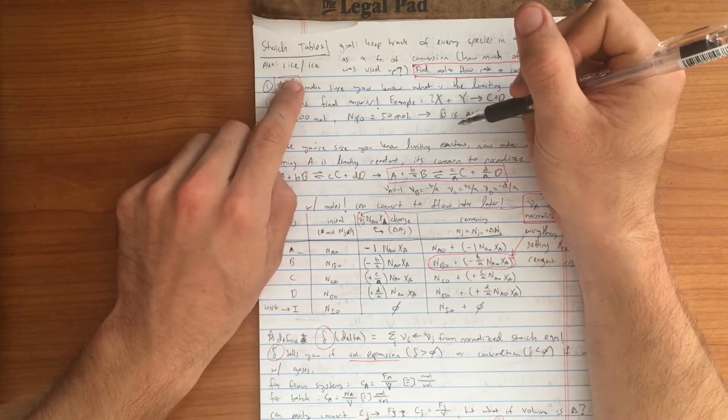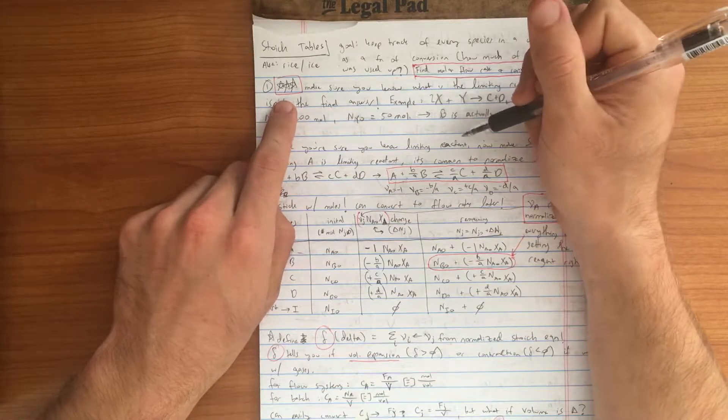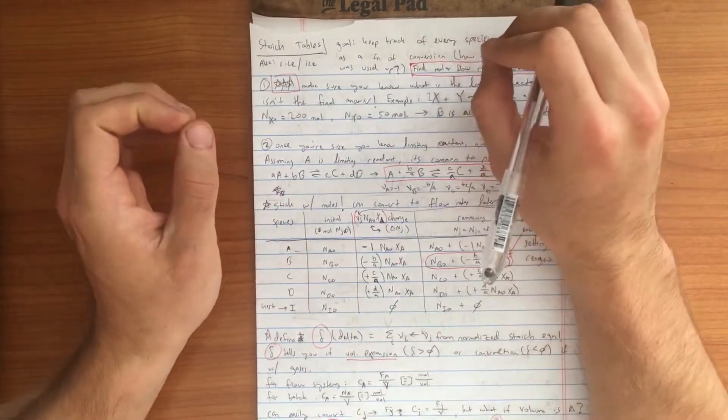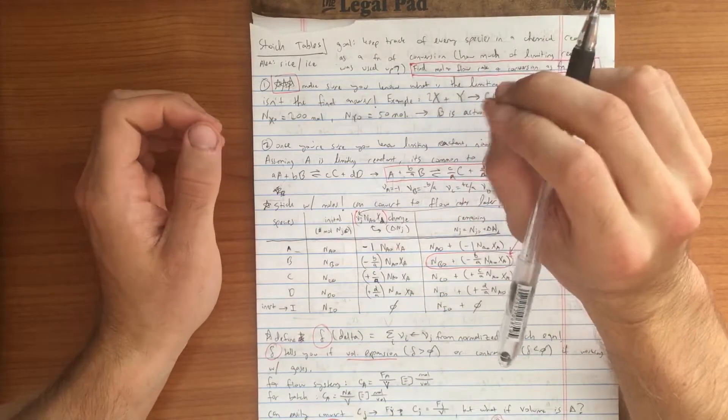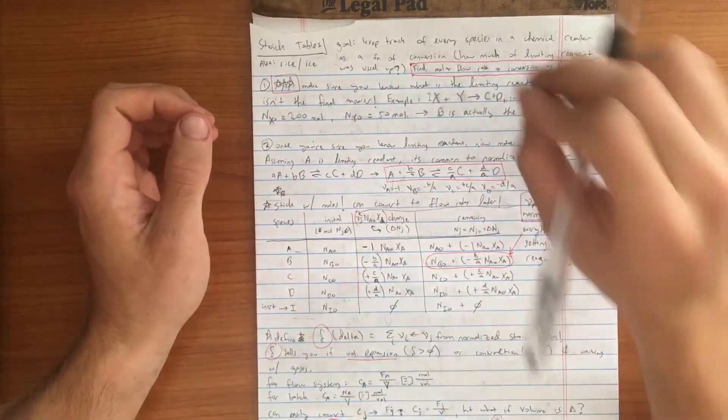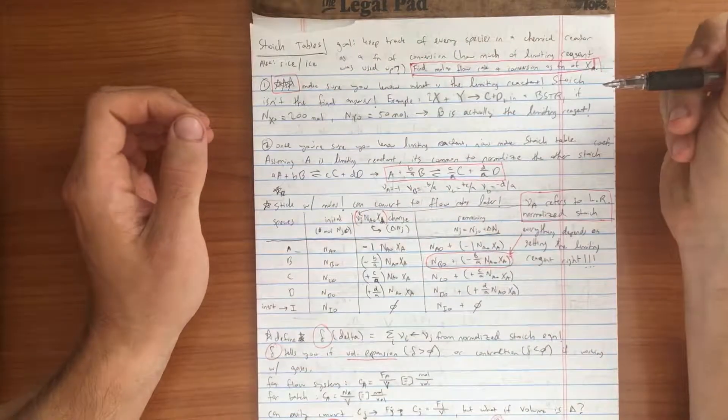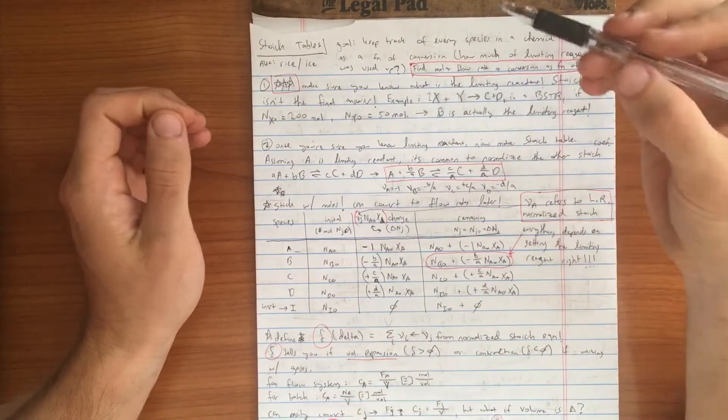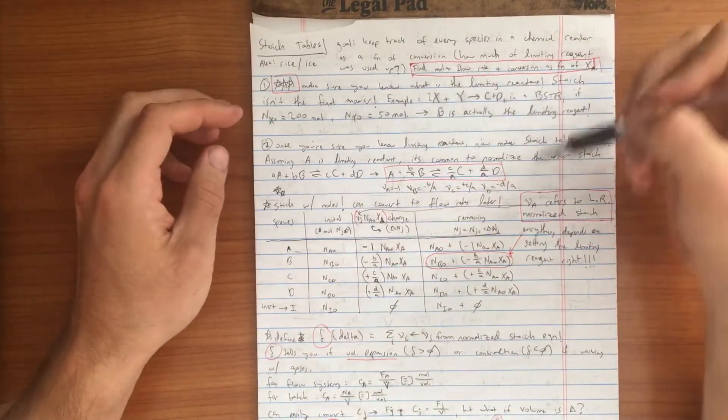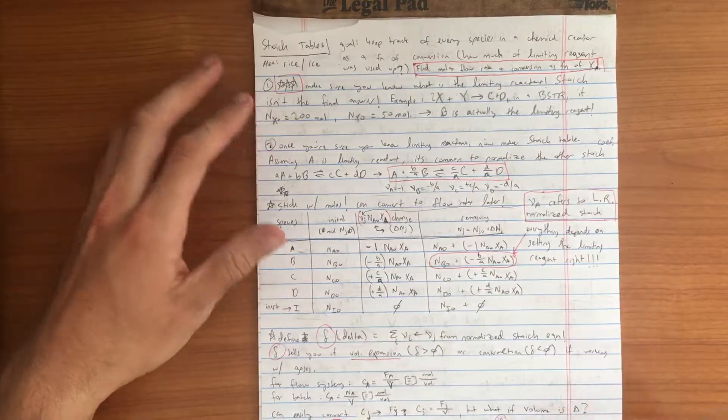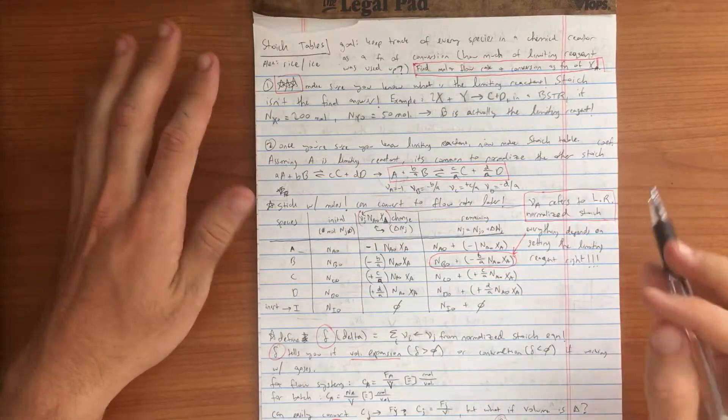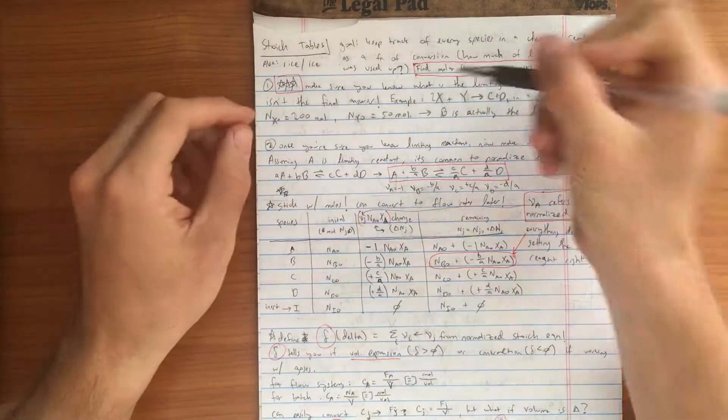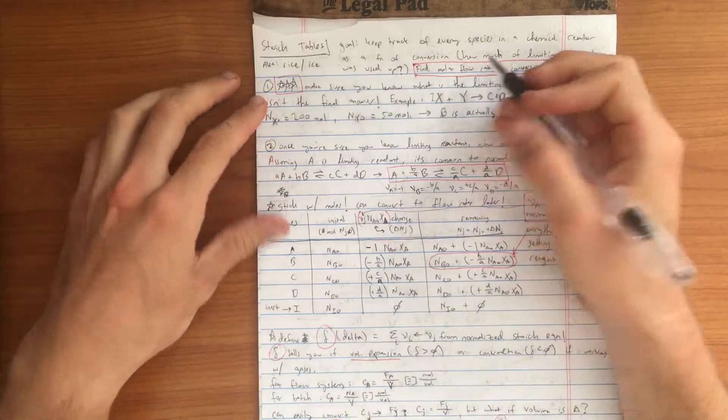The first step to forming a stoichiometric table is first and foremost, and I cannot hit this home hard enough, make sure you understand with 100% certainty what the limiting reagent is. You have to make sure you read the question or you fundamentally understand the initial conditions. If you don't do that, you can end up doing a lot of work and get garbage. Before you start anything, make sure you understand what your limiting reactant is.